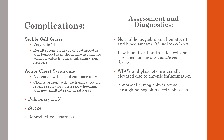For assessment and diagnostics: those with only sickle cell trait will have normal hemoglobin and hematocrit, while those with sickle cell disease will have low hematocrit and sickled cells visible on the blood smear. White blood cells and platelets are usually elevated due to chronic inflammation. Abnormal hemoglobin is confirmed through electrophoresis.